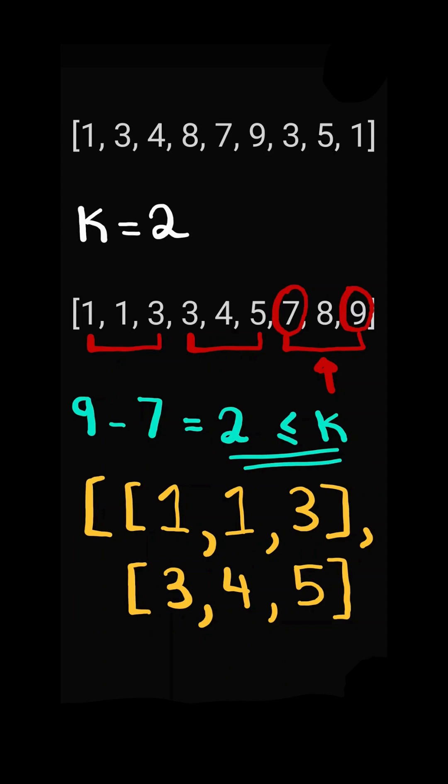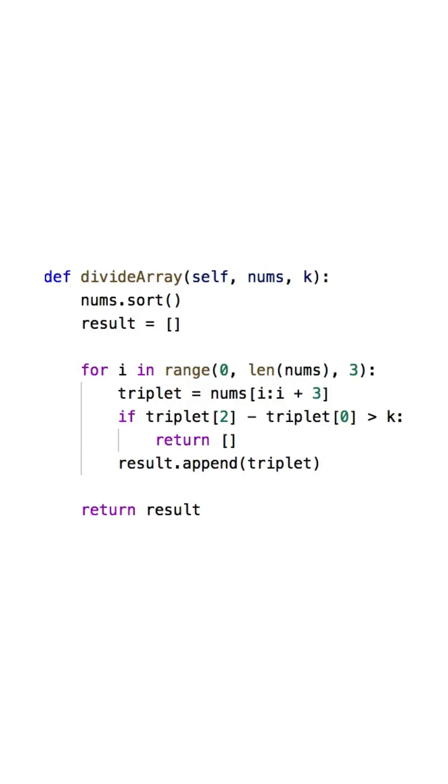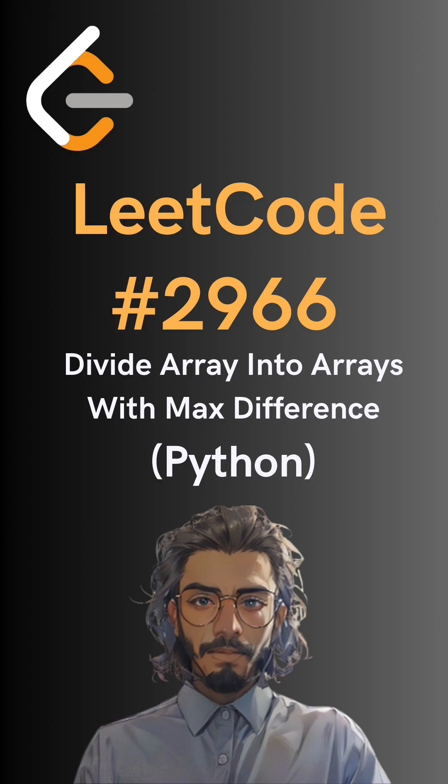Again, the difference is less than or equal to k, so we add the subarray to our result. And here is the code to do so. Please like and follow for more.